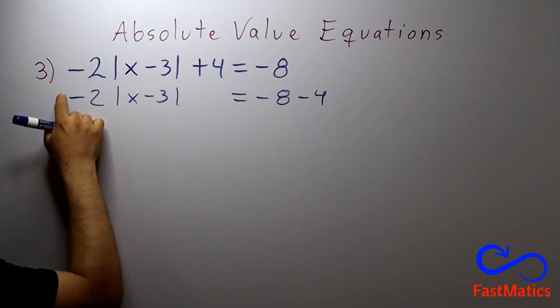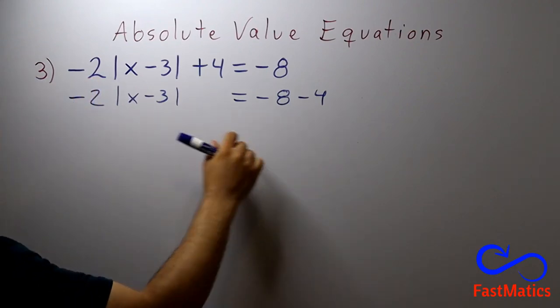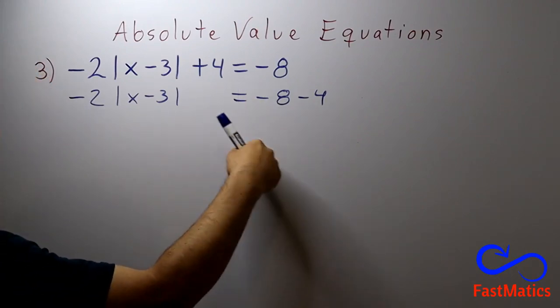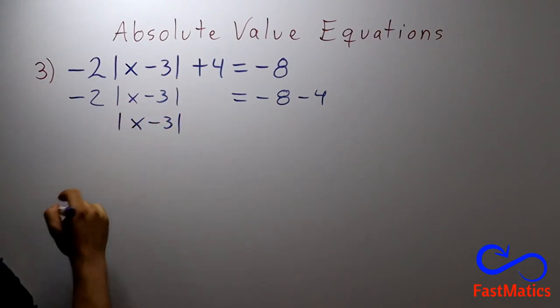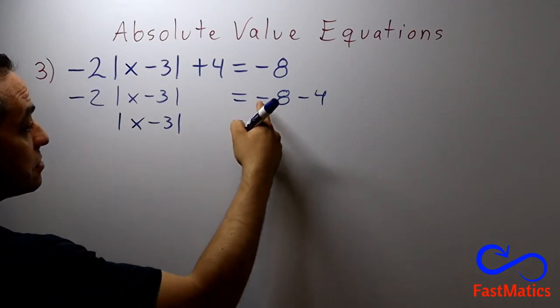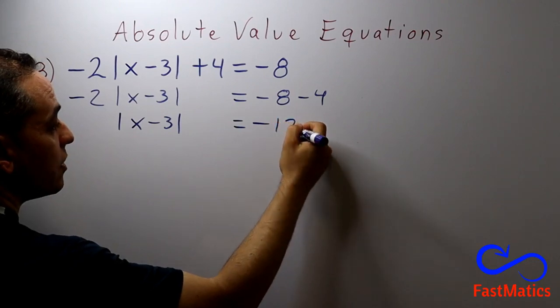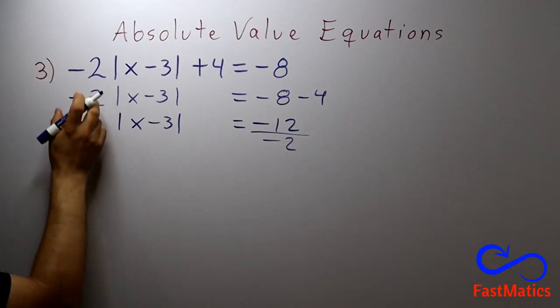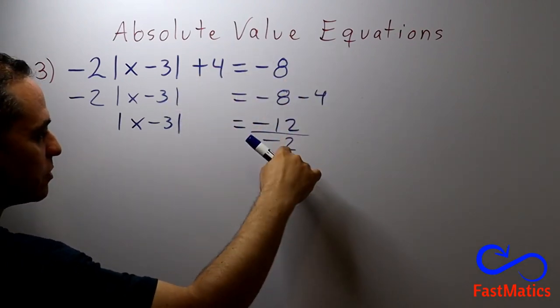After that, you need to pass the negative 2 to the other side dividing, because here it is multiplying. So you take the negative 2 and you pass it to the other side, but to the denominator. Then you leave the absolute value of x minus 3. You solve negative 8 and negative 4 is negative 12, but the negative 2 is passing to the denominator. Remember that when you pass something to the denominator, you don't change the sign. Here yes, but to the denominator, no.